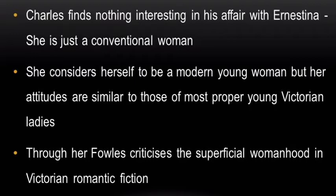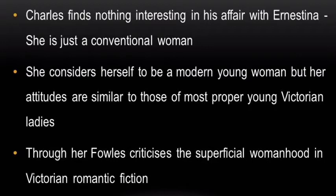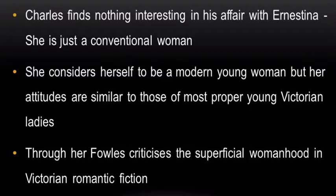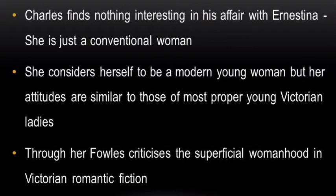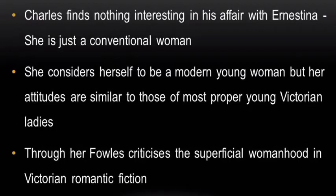Charles is bored and dissatisfied with the normal course of his life. He finds nothing interesting in his affair with Anastina. Everything about Anastina appears normal to Charles. She is just a conventional woman, though she considers herself to be a modern young woman. Her attitudes are similar to those of most proper young Victorian ladies. It is through her that Fowles criticizes the superficial womanhood in Victorian romantic fiction.